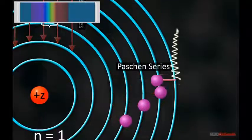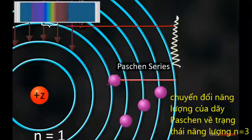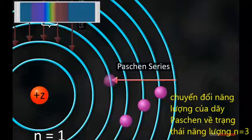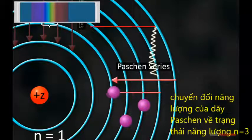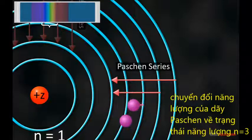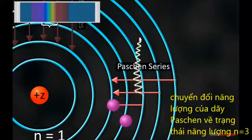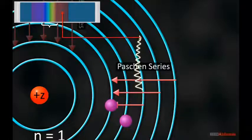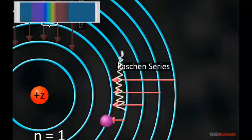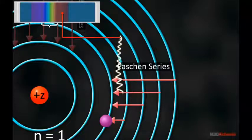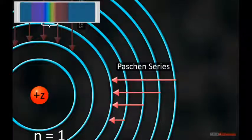When a transition from higher orbits to the third orbit occurs in the atom, Paschen series is obtained. The values of frequencies obtained in this transition lie in the infrared region of the electromagnetic spectrum.